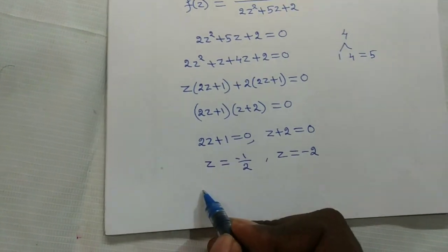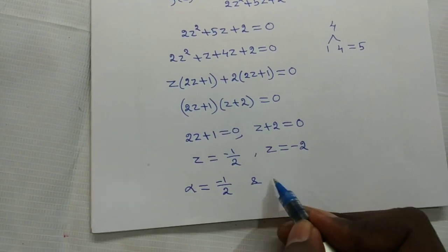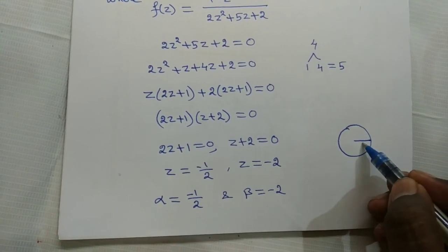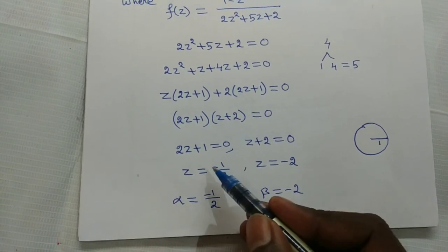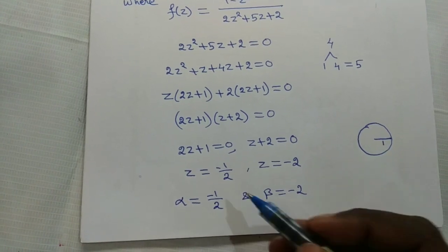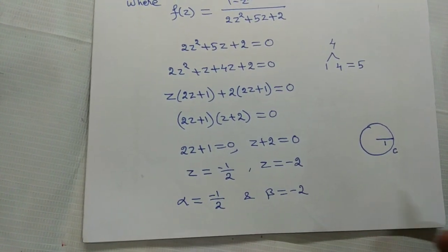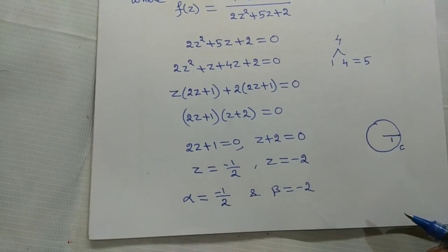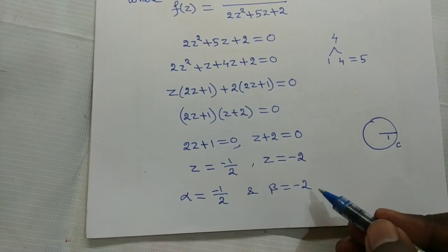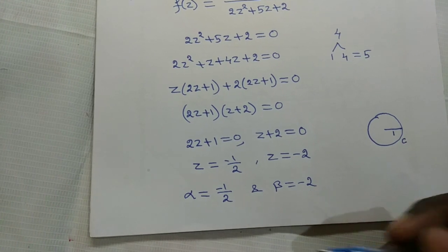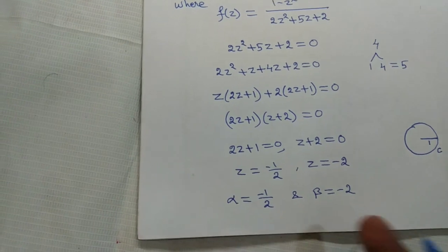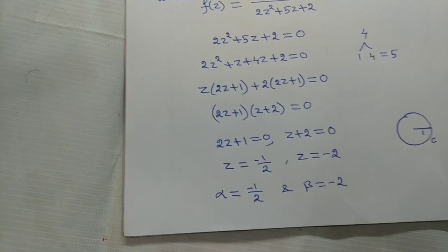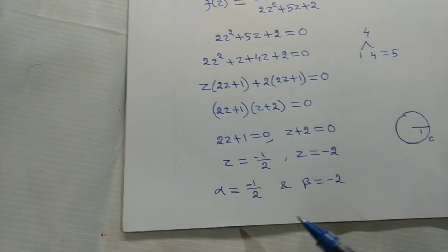We consider the unit circle of radius 1. For pole α = −1/2: |α| = 1/2 < 1, so α lies inside C. For pole β = −2: |β| = 2 > 1, so β lies outside C. Therefore α is a simple pole inside circle C, and β is a simple pole outside circle C — we only calculate the residue at α.